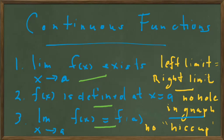When the third part of the definition fails, we get a hiccup in the graph. For continuity to hold, there cannot be a hiccup in the graph. Let's look at examples of all three types of discontinuity on the following slides.